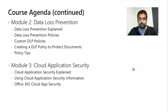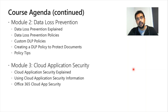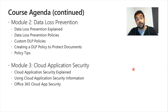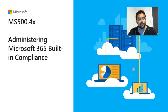DLP is a technique to prevent intentional and unintentional data leakage. We'll cover how to configure DLP, protect sensitive information, prevent internal users from sending sensitive company data, protect documents with DLP, and use policy tips to notify users attempting to share confidential information. We'll also cover Cloud Application Security for Microsoft 365.